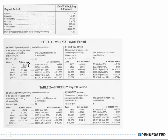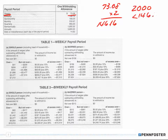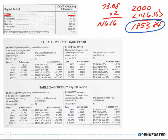Let me pull up the tables we need. This is a weekly payroll, and each allowance is $73.08. She has two of them, so we multiply by two, giving us $146.16. To find the taxable amount, we take $2,000 and subtract $146.16, leaving us with $1,853.84.